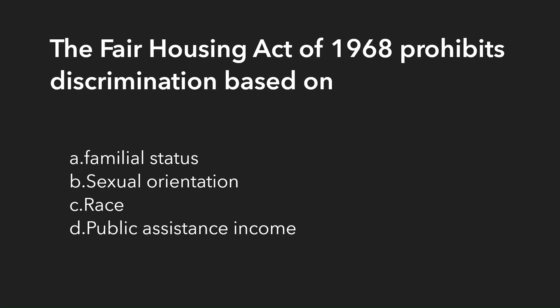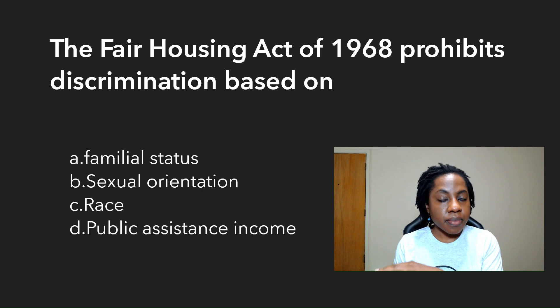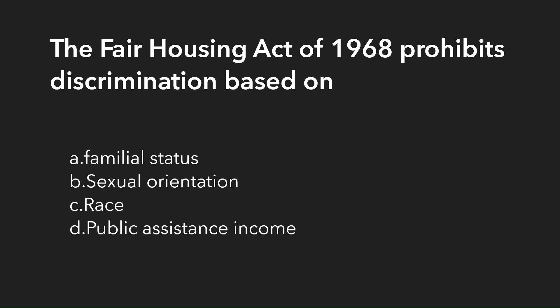Question one: The Fair Housing Act of 1968 prohibited discrimination based on — and you can pause here and try to solve it before continuing. Our options are: A, familial status; B, sexual orientation; C, race; D, public assistance income. Think about which protected classes came from 1968 specifically.